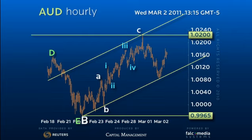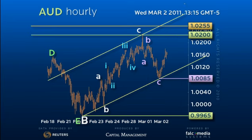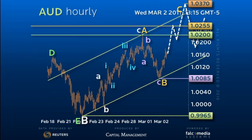We suspect the interim pullback to the exact 50% support level of 100.85 now sets a base to extend the uptrend through the outstanding 102.55 high to the next 103.70 target. Only below this 100.85 pivot point would force a more complex range trading pattern and a retest of 99.40 to 99.65 support before the rally resumes in earnest.